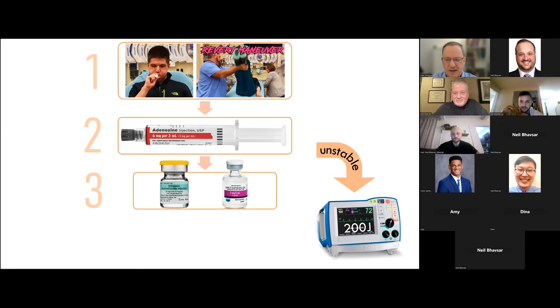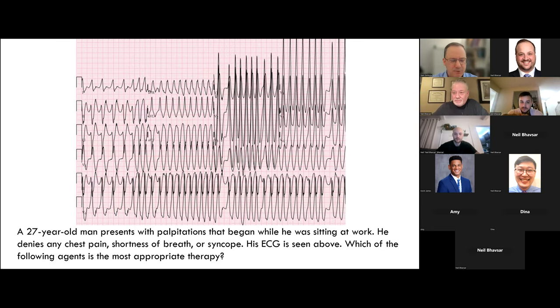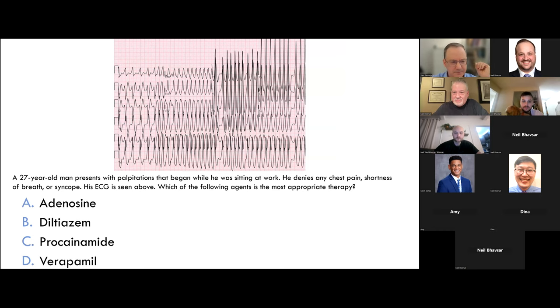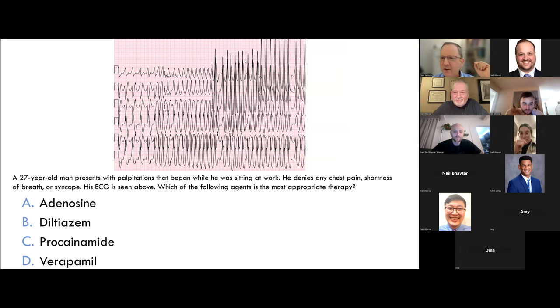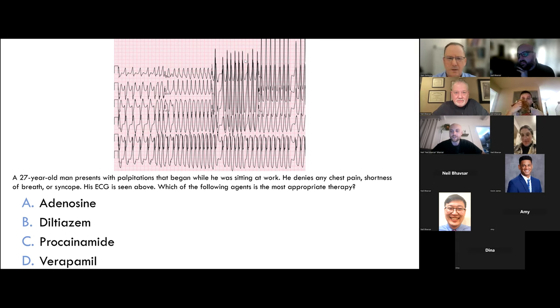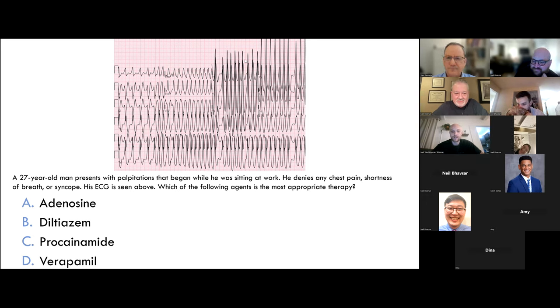Here's another patient: a 27-year-old man presents with palpitations that began while sitting at work. He denies chest pain, shortness of breath, or syncope. His ECG is shown. Neil says C for procainamide, and explains: it's very fast, wide, and irregular in places — the only thing that goes that fast is pre-excited AFib. With wide complex tachycardia, procainamide is preferred.